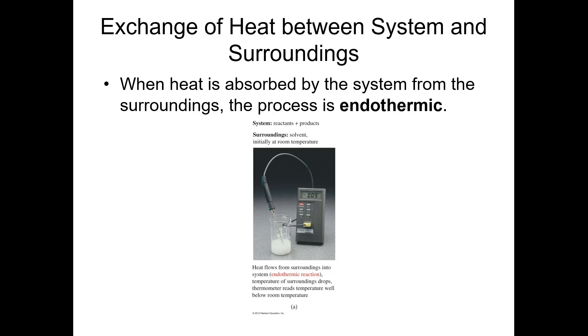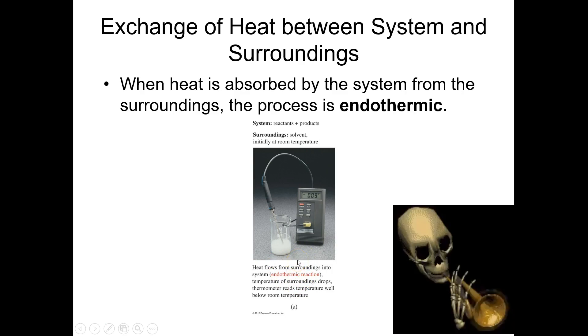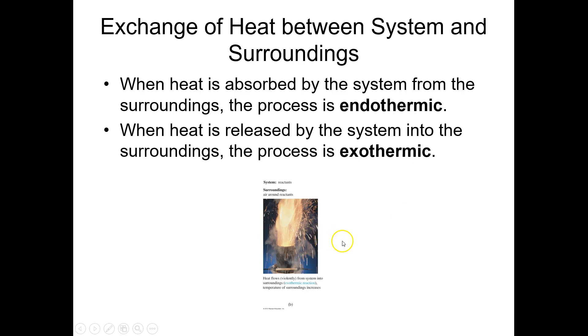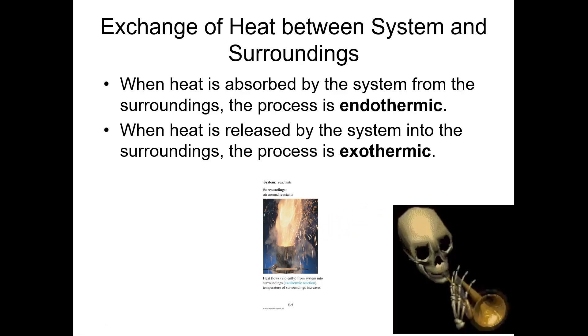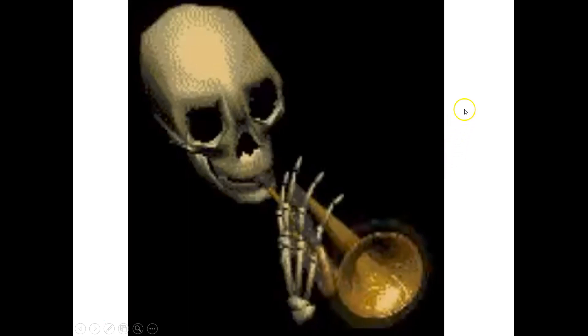An example of an endothermic reaction is dissolving ammonium nitrate in water — the temperature goes down because heat is required to make it occur, and the potential energy of the products is greater than that of the reactants. When we burn something, the potential energy of the products is lower than that of the reactants, heat is transferred from the system to the surroundings, and that is an exothermic reaction. Look for guidance in the QOD assignment for what types of problems to expect — this chapter will become more focused and more understandable as we move forward. Thanks for watching.